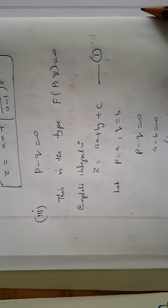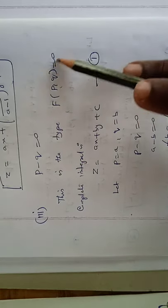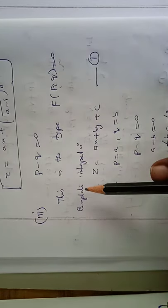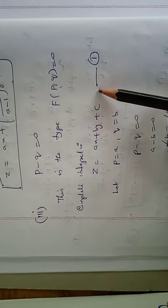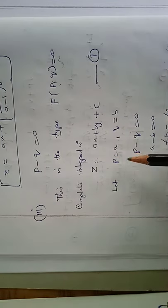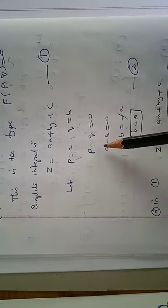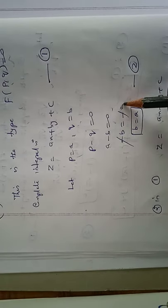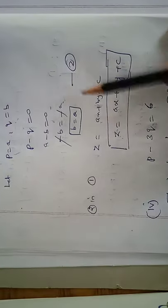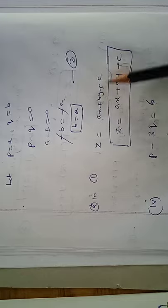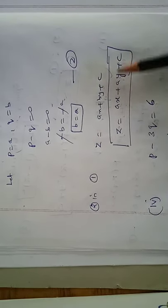The third problem: p minus q equal to 0. This is also type number 1, f(p, q) equal to 0. The complete integral is z equal to ax plus by plus c, equation number 1. Substituting p equal to a and q equal to b: a minus b equal to 0, so b equal to a, equation number 2. Substituting into equation 1: z equal to ax plus ay plus c.